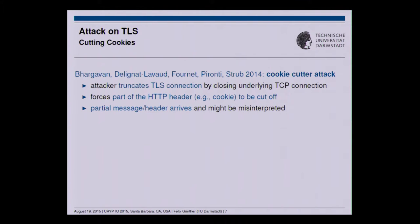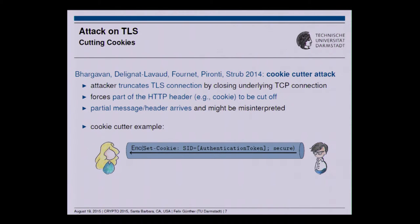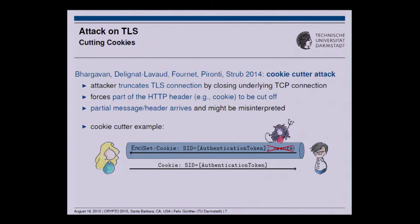To be more precise: in the Cookie Cutter example, Alice and Bob communicate, Bob being the server. Alice authenticates, and at some point Bob sends Alice an authentication token — a cookie — saying 'please send this back when you talk to me again so I know it's still Alice.' This is a security-critical cookie marked with the secure flag, meaning please only send this back over a TLS-protected communication channel. The Cookie Cutter attack means the adversary can chop off the secure flag portion, so Alice interprets the cookie as a standard cookie and happily sends it back even over a non-protected channel, where the adversary grabs it from the wire.